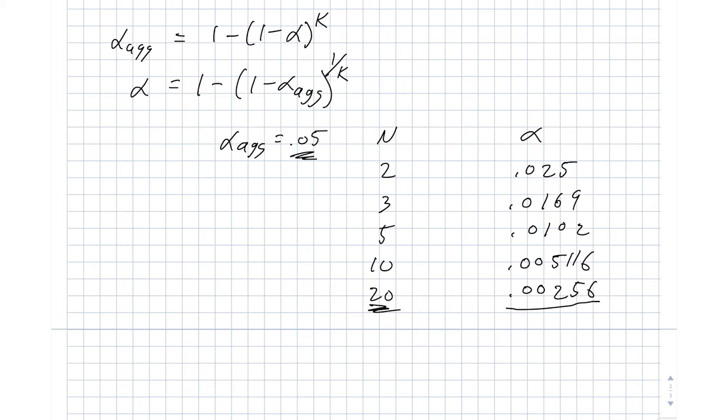So this is one way to correct our alpha. This particular approach is called Sidak correction. And if I have n different models, and I want to make a conclusion that one of them is good enough, then this tells me what my alpha ought to be.